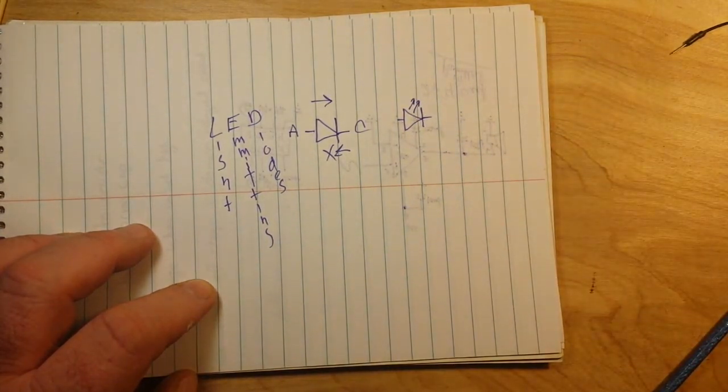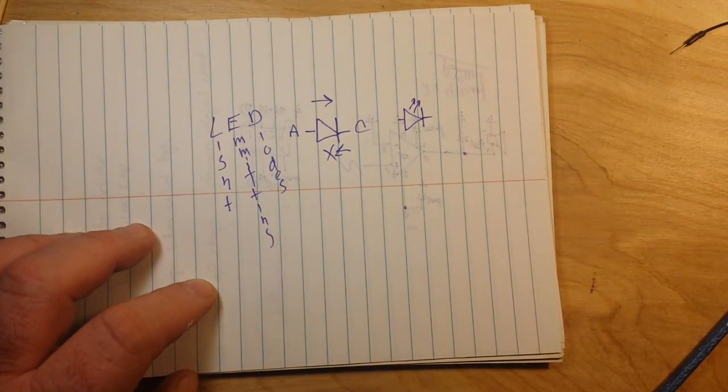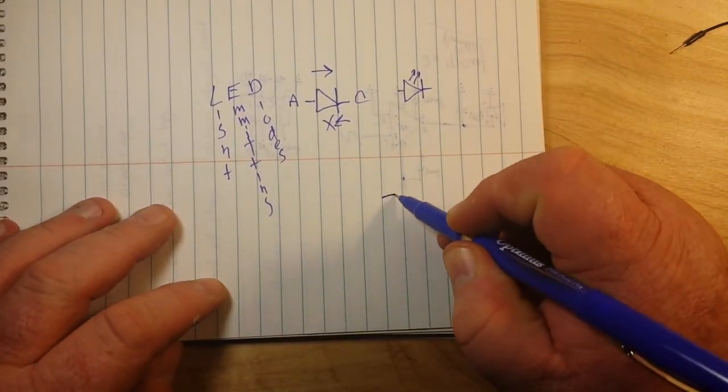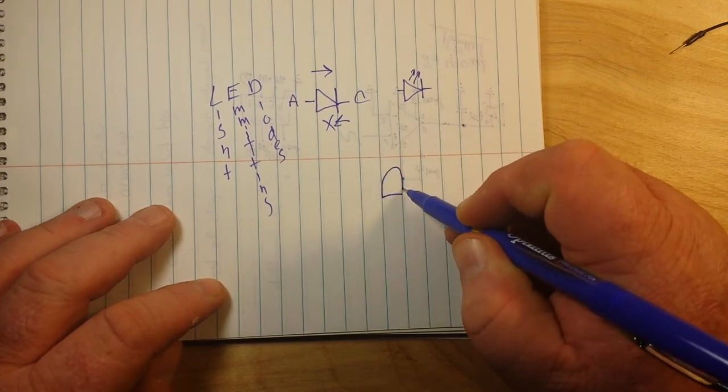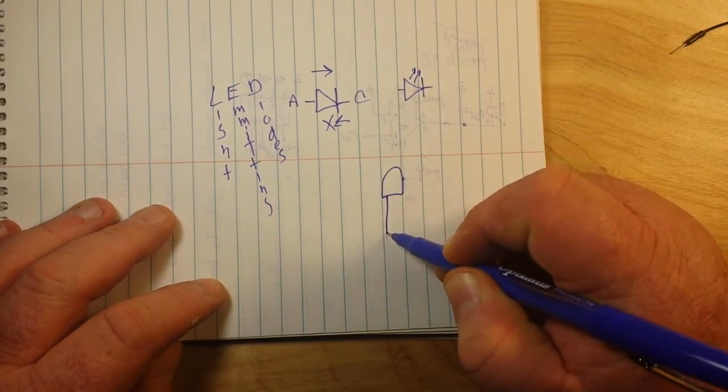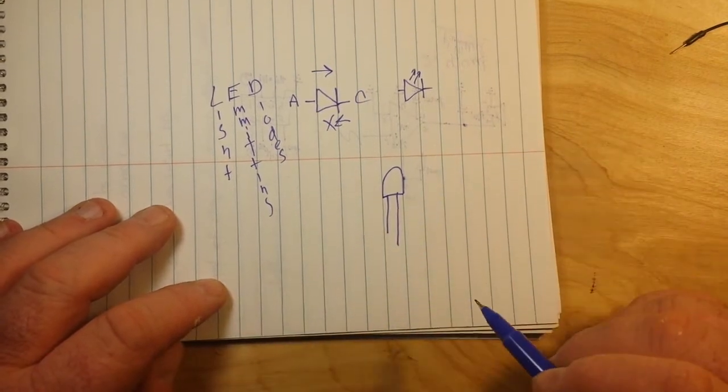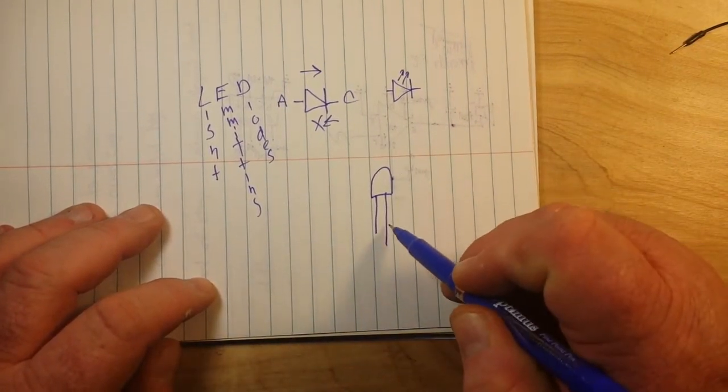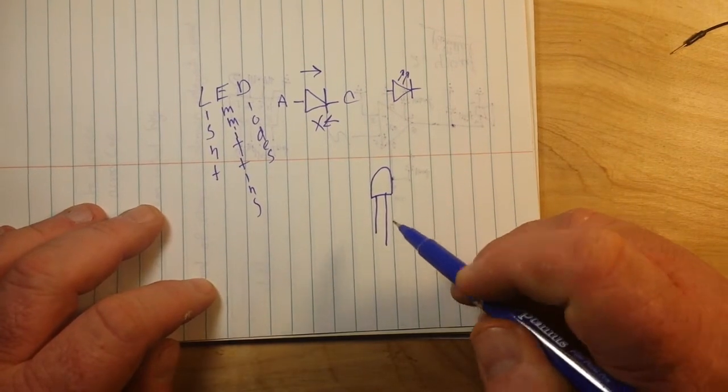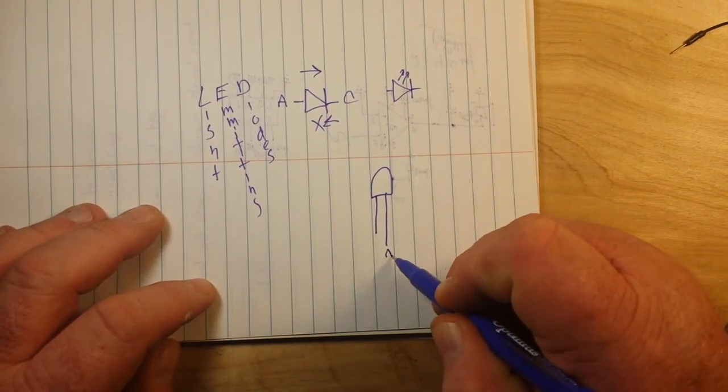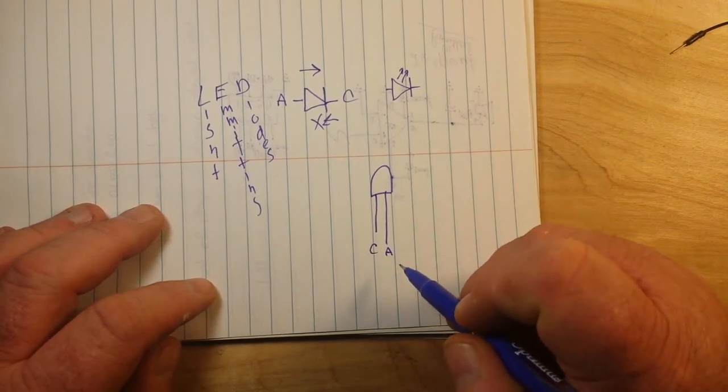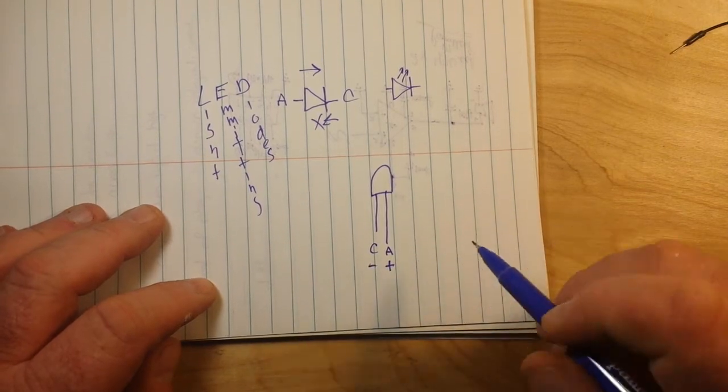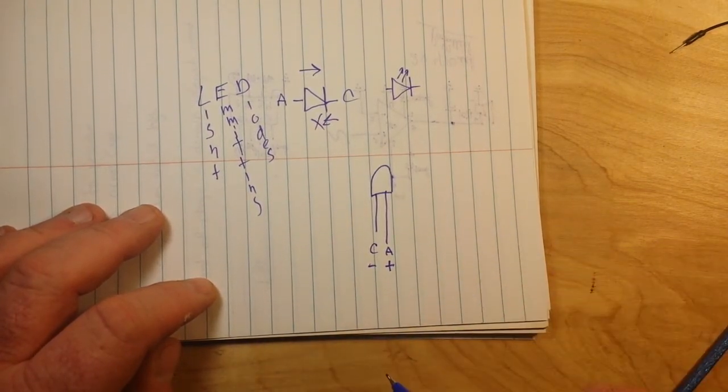Now the symbol for an LED is just like a regular diode except it has two arrows pointing up in a way that signifies it's a light emitting diode. Your basic LED, and we're going to use a five millimeter LED, looks something like this and it is generally going to have a long leg and a short leg. The long leg will be the anode and the short leg will be the cathode, but you don't have to remember those names. You can just remember positive and negative.